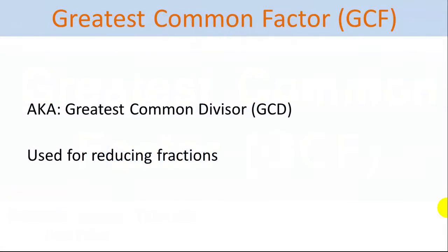A Greatest Common Factor is used to reduce fractions. You find the Greatest Common Factor of both the numerator and the denominator so that you can reduce the fraction as quickly as possible. It's also called the Greatest Common Divisor.